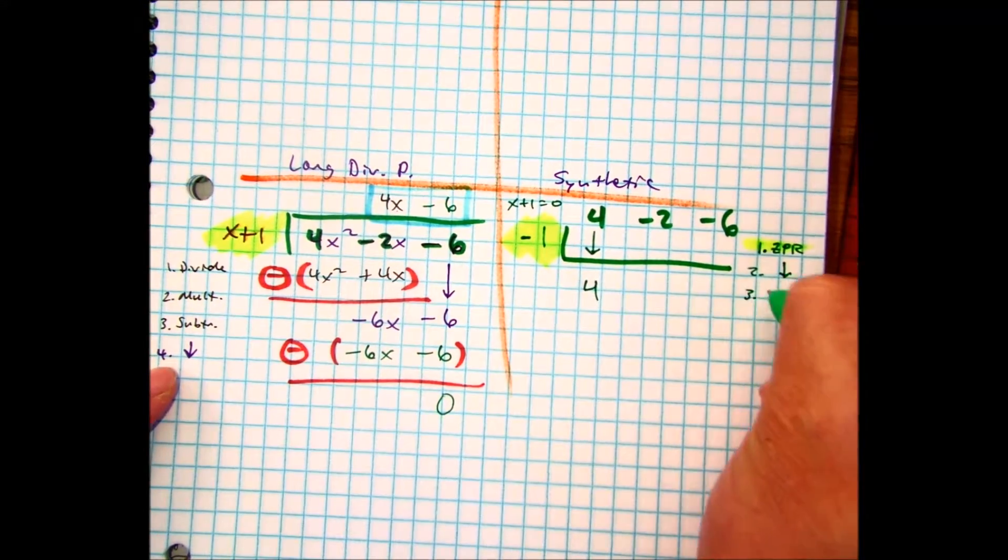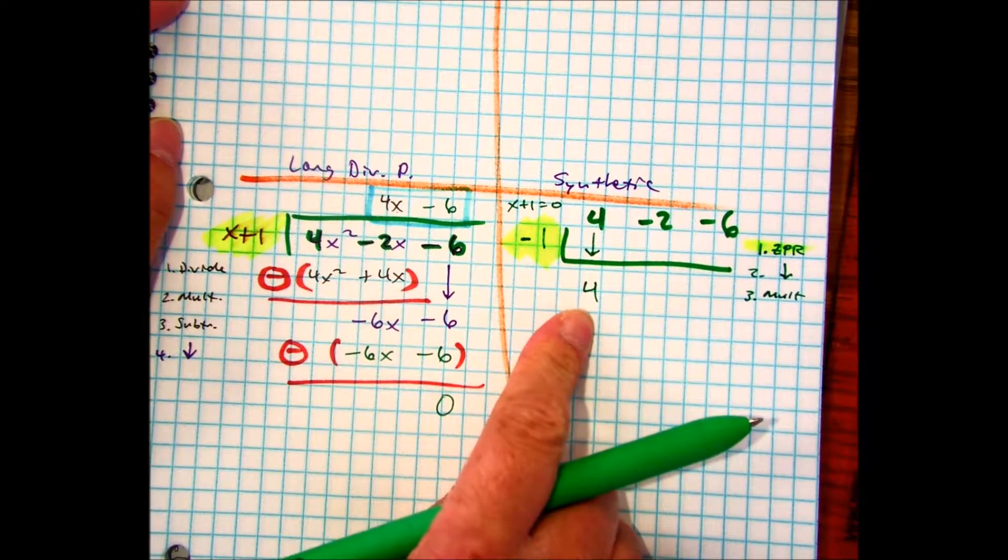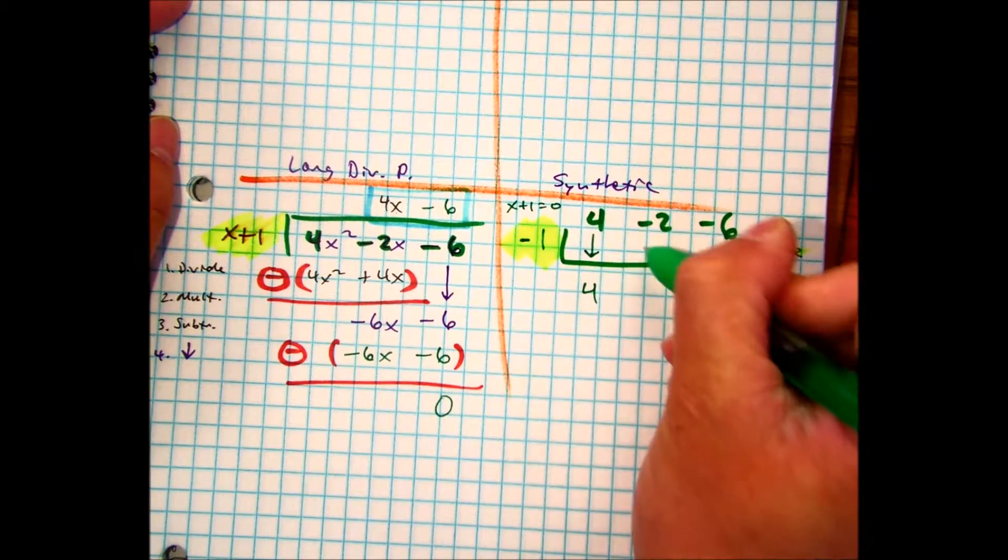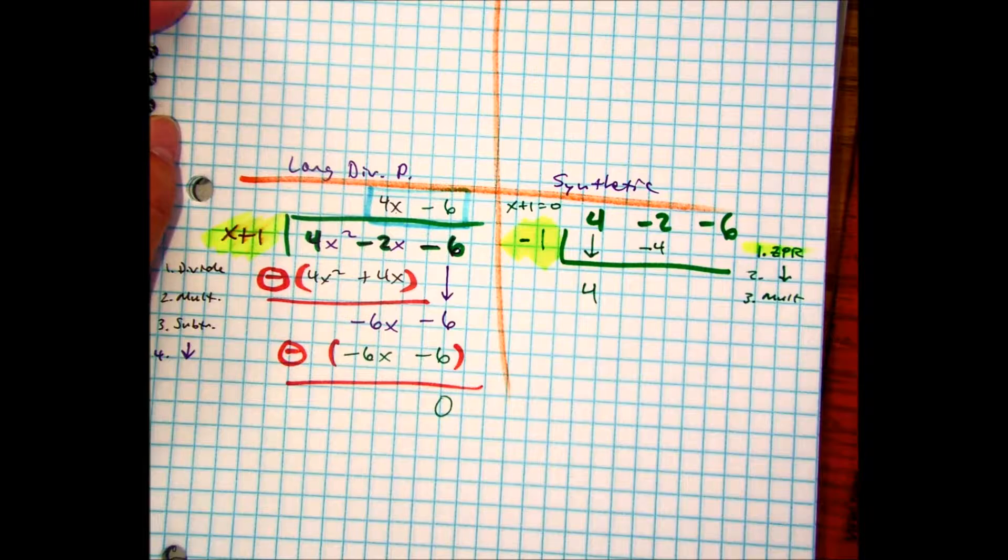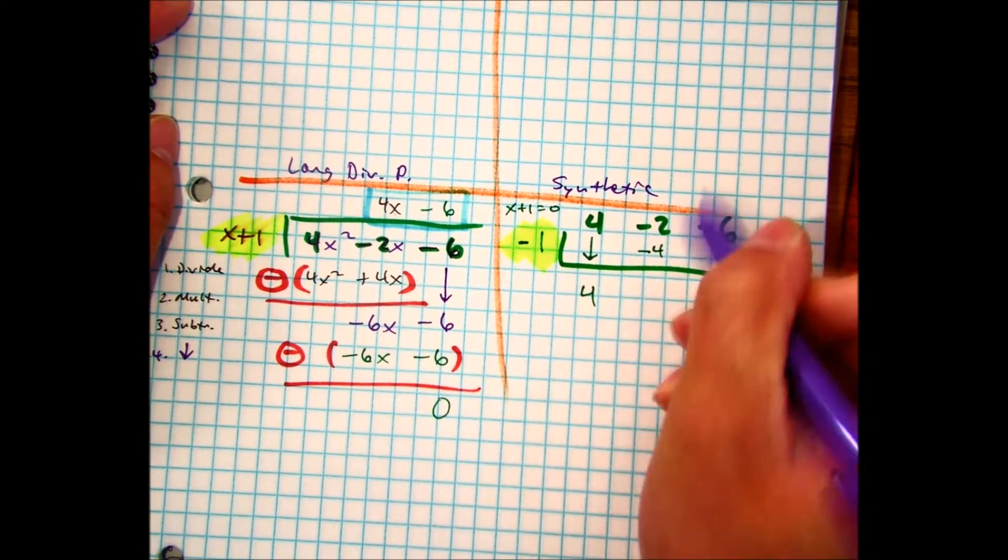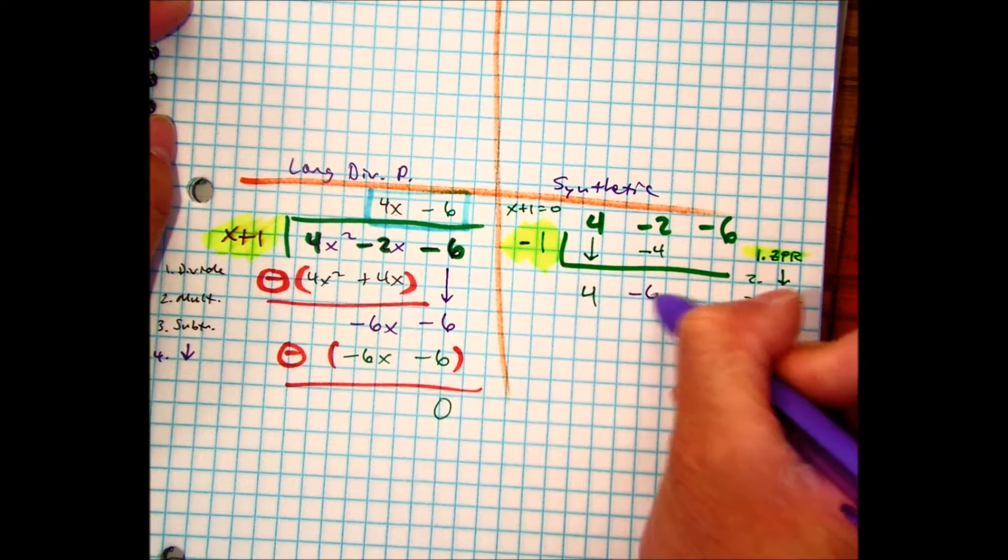Everyone say multiply. So let's multiply. Class, negative 1 times 4. So I put that over here. So multiply, put it here. Everyone say add. Now we're going to add down. Negative 2 plus negative 4. Negative 6.